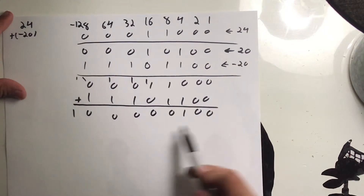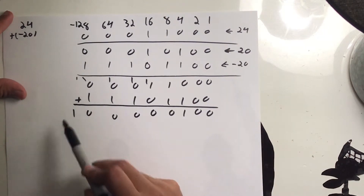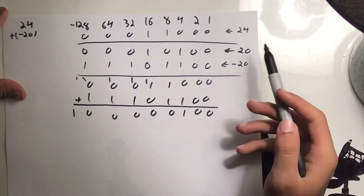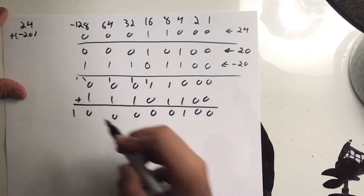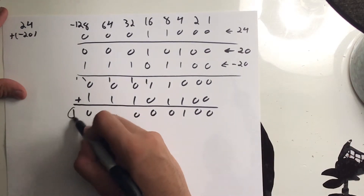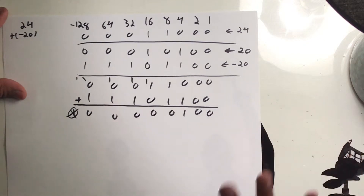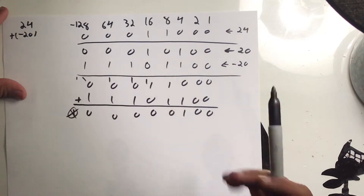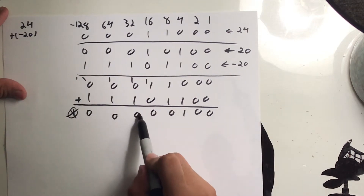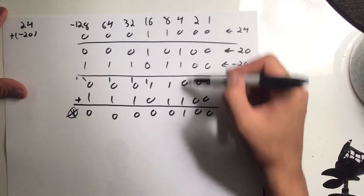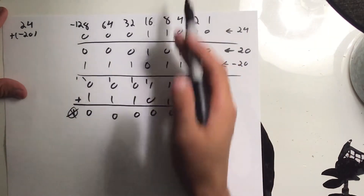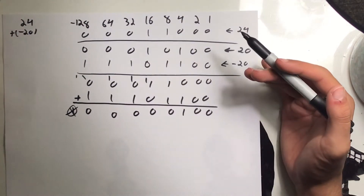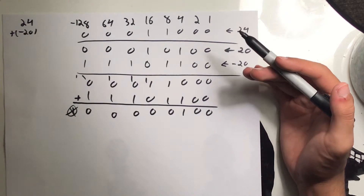The result is 9 bits. Because we're working with 8 bits — both numbers are bytes — you ignore the ninth bit, the carry-out. We all know 24 minus 20 is 4, and the only bit that has a 1 is in the 4 column — the 2-to-the-2nd-power column. That's how computers actually add and subtract numbers using two's complement.